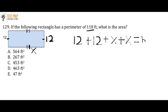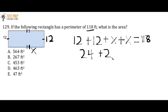So I can use this formula and do the math to figure out what the missing side is — that's my first step. Doing some simplification: we see 12 plus 12 is 24, X plus X is 2X, and this is all equal to 118.